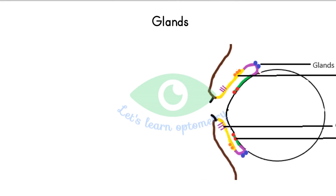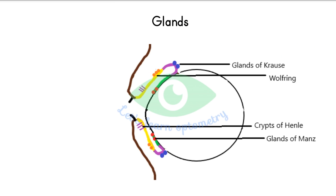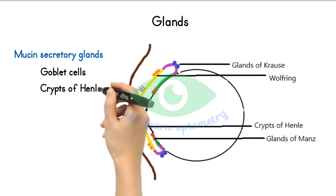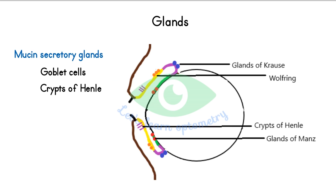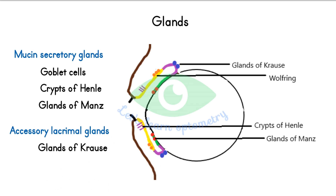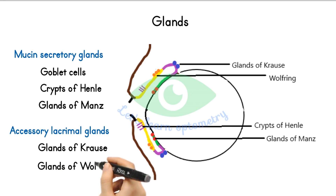There are various glands at different parts of the conjunctiva. The mucin-secretory glands produce the mucin layer of the tear film via goblet cells, which are unicellular glands in the epithelium. The crypts of Henle are present in the tarsal conjunctiva. The glands of Manz are found in the limbal conjunctiva. Accessory lacrimal glands secrete the aqueous layer of the tear film — the glands of Krause are present in the subconjunctival tissue of the fornix (about 42 in the upper fornix and 8 in the lower), and the glands of Wolfring are present along the upper border of the superior tarsus and the lower border of the inferior tarsus.